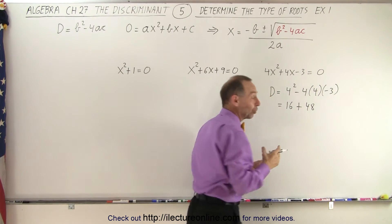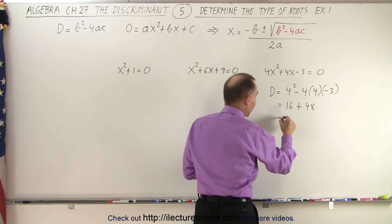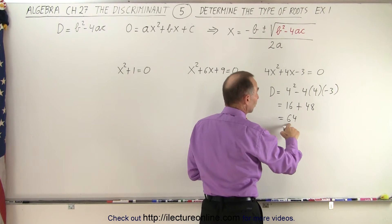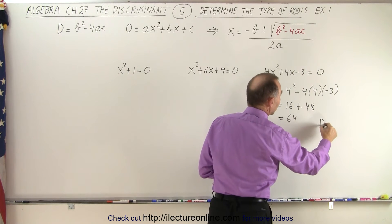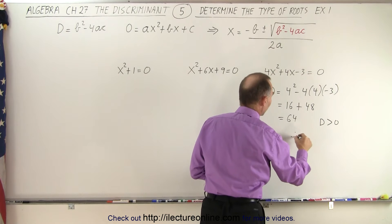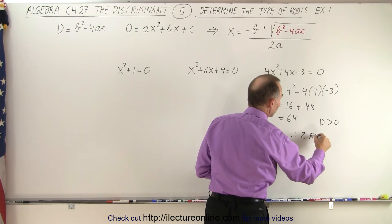So I don't have to go any further, really. You know that this is equal to 64, but you know that it's positive. So we say that D is greater than 0. So therefore, there are two real roots.